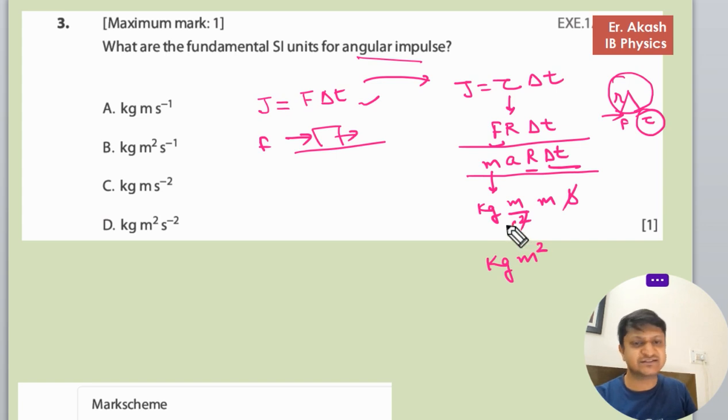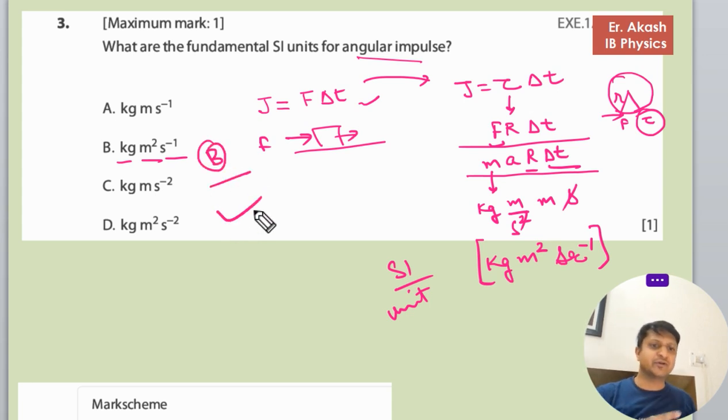So this will be the SI unit for angular impulse. Now we will check the options, and the option says that kg meter squared second minus one is B option, which will be the right option. Now we will check the mark scheme.